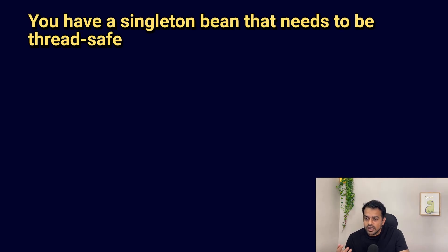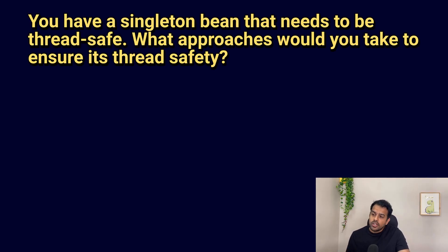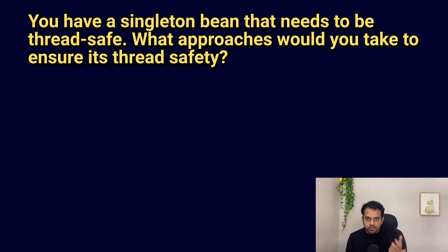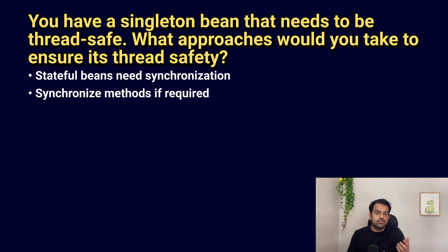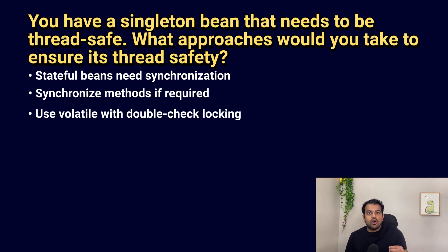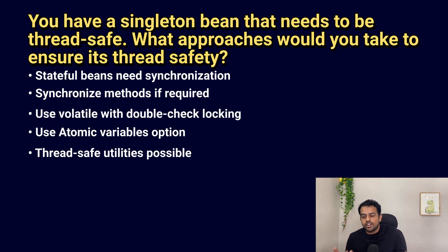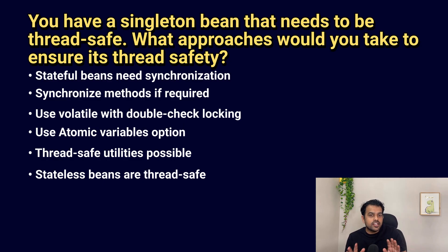The next question is: you have a singleton bean that needs to be thread safe — what approaches would you take? If the bean performs stateful operations, you need synchronization. You can make the method synchronized, use volatile, use double-checked locking, or use thread-safe classes like AtomicVariables. If the bean is stateless, it's naturally thread safe and needs no extra work — it depends on how the bean operates.